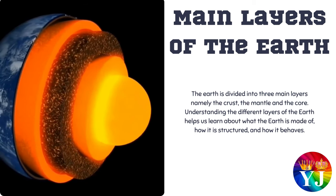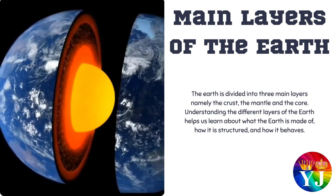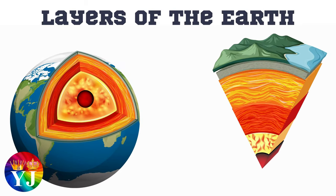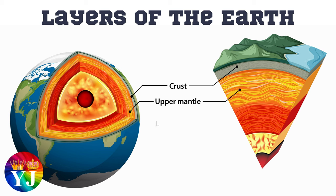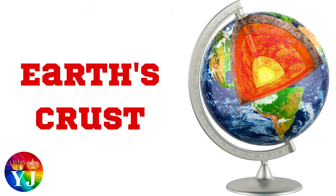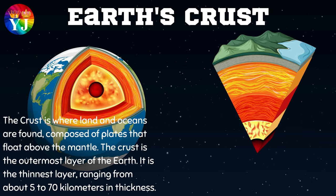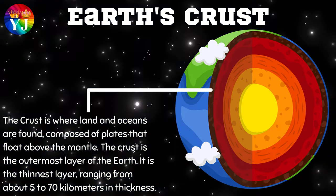Understanding the different layers of the Earth helps us learn about what the Earth is made of, how it is structured and how it behaves. The crust is where land and oceans are found, composed of plates that float above the mantle. The crust is the outermost layer of the Earth. It is the thinnest layer, ranging from about 5 to 70 km in thickness.